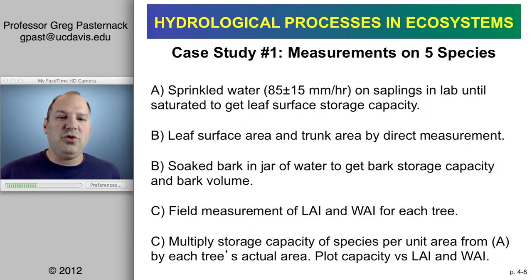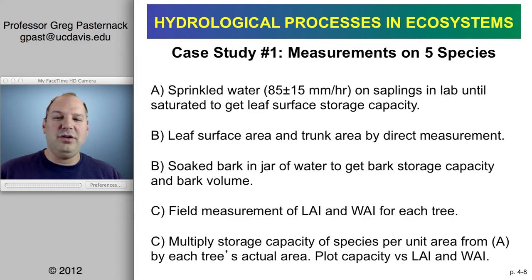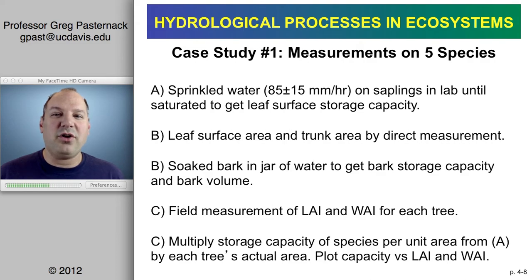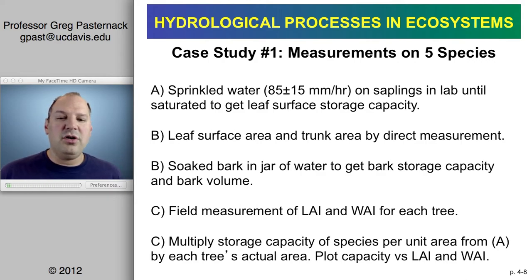To get a sense of overall interception capacity, they took saplings, cut them at the base, and brought each tree into the lab hung from a weighing scale. Then they used a rainfall simulator — essentially a giant sprinkler that very evenly sprays water onto the trees — and directly measured the amount of water taken up by the tree. As water is sprinkled on the tree, some falls through and hits the ground, some stays on the tree, increasing its weight. By tracking the change in weight through time, you can relate that to an amount of water.